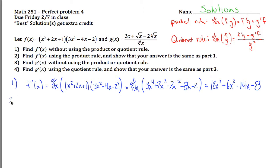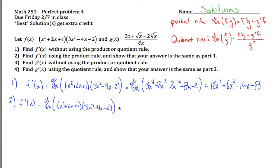What we're now going to do is solve this problem a different way. Instead of multiplying the two polynomials out, once we learn the product rule, we have the machinery to take this derivative directly. So the derivative of x squared plus 2x plus 1 times 3x squared minus 4x minus 2 — if I apply the product rule, it says anytime you're taking the derivative of two functions multiplied together, take the derivative of the first one, the derivative of x squared plus 2x plus 1, and multiply that by the second function, 3x squared minus 4x minus 2.